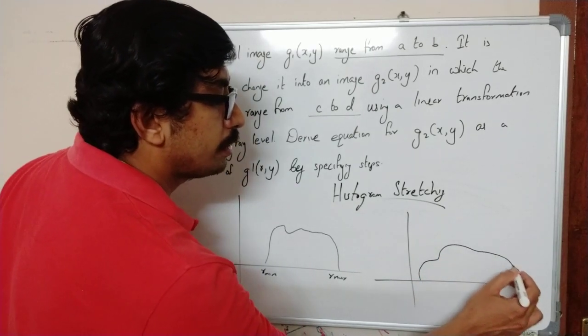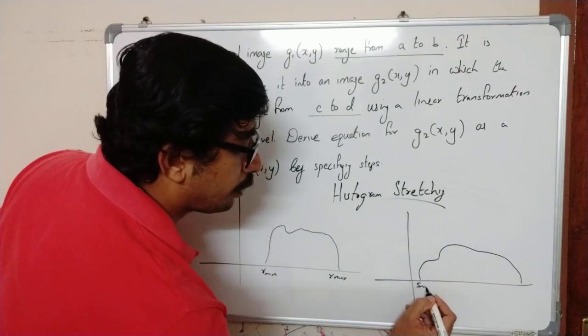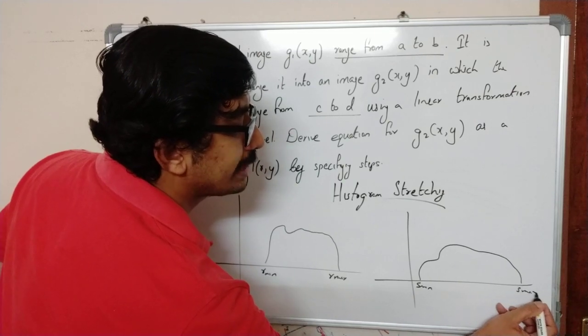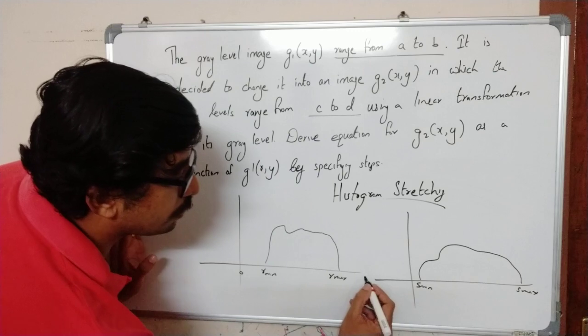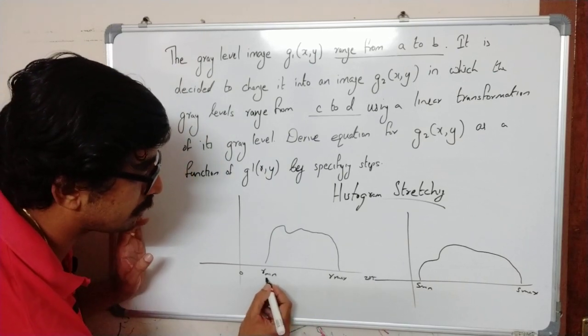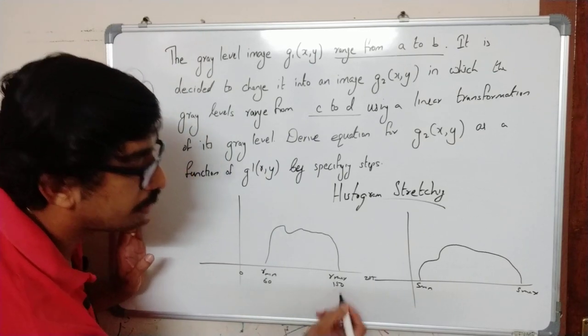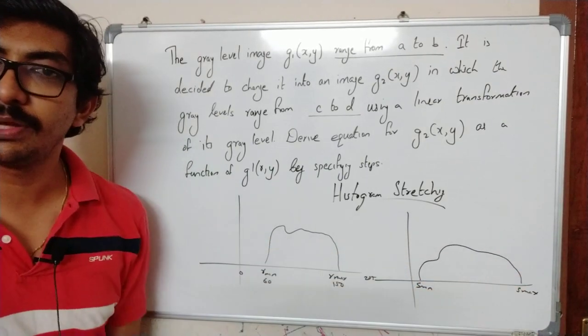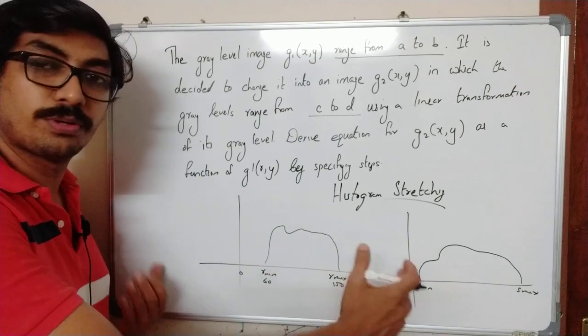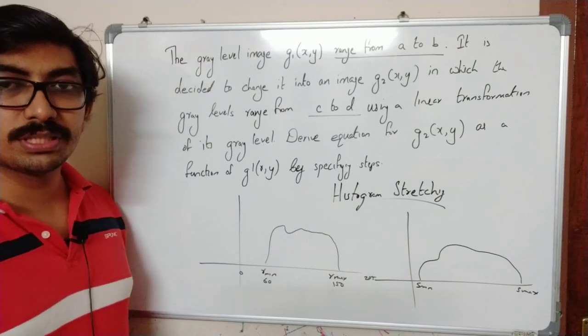So we can start from a smaller S min to an S max value. Suppose if the maximum possibility is from 0 to 255 and in the original image it is from say 60 to 150, we can stretch it to say from 10 to 200. So this process is called histogram stretching and for that we are using a transform function.